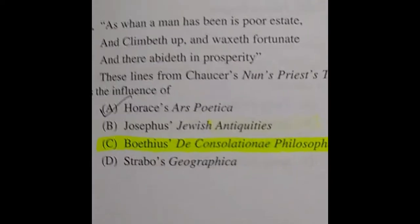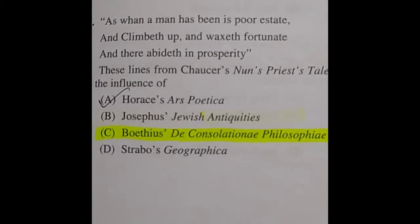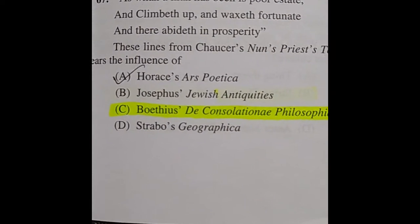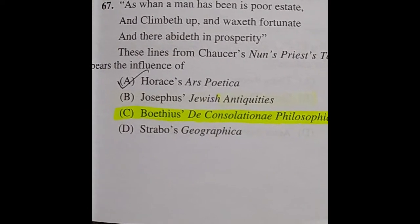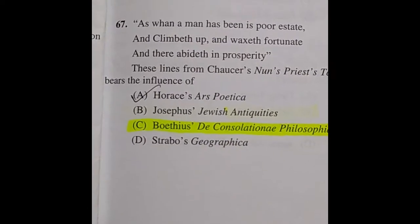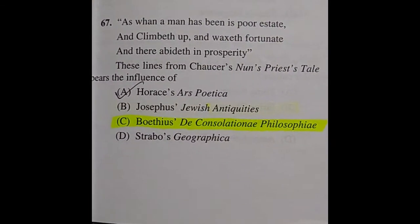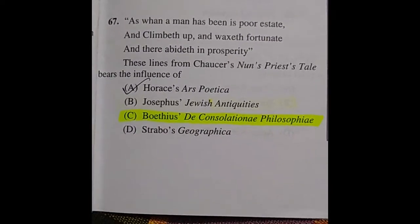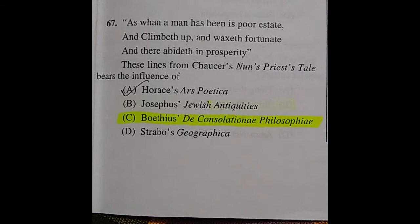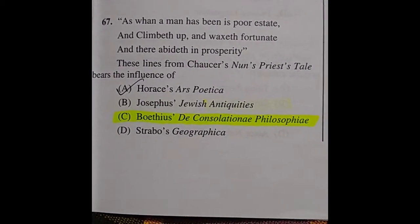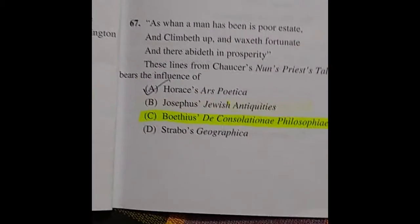Question 67: 'As one a man has been in poor estate and climbeth up and waxeth fortunate and there abideth in prosperity' — these lines from Chaucer's Nun's Priest's Tale bear the influence of the right answer: option C, Boethius's De Consolatione Philosophiae.